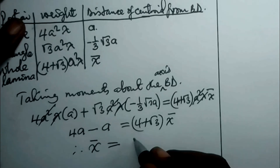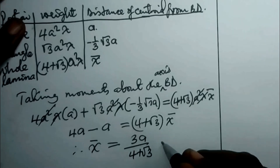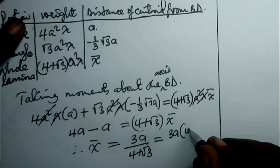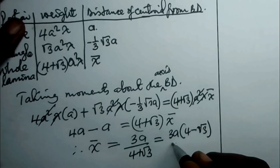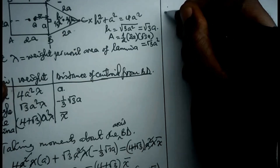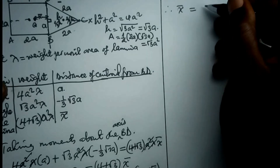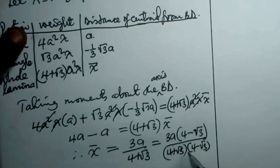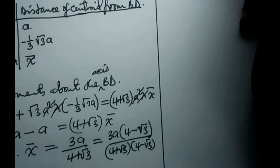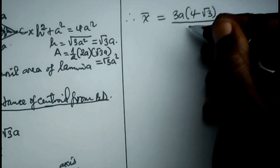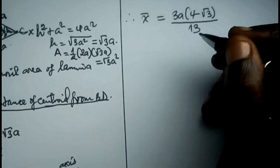So x̄ = 3a / (4 + √3). Rationalising the denominator by multiplying by the conjugate (4 − √3): x̄ = 3a(4 − √3) / [(4 + √3)(4 − √3)]. The denominator is the difference of two squares: 4² − (√3)² = 16 − 3 = 13. Therefore x̄ = 3a(4 − √3) / 13, as required.